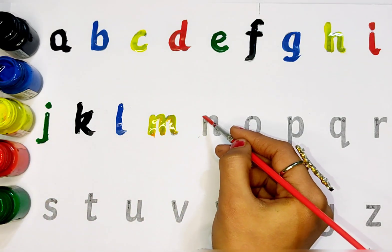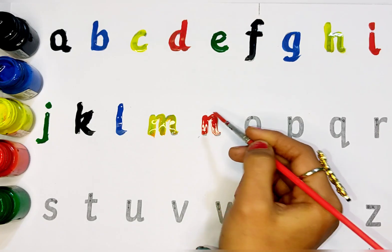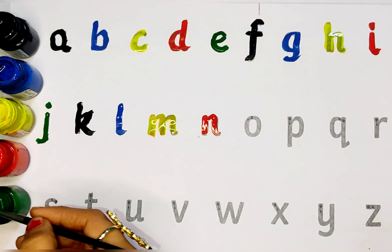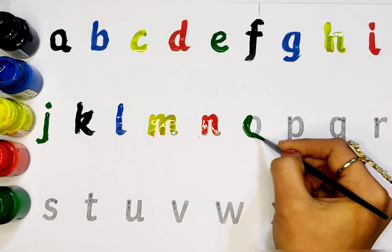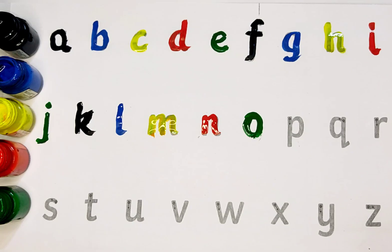Red color. N. N for necklace. Green color. O. O for orange.